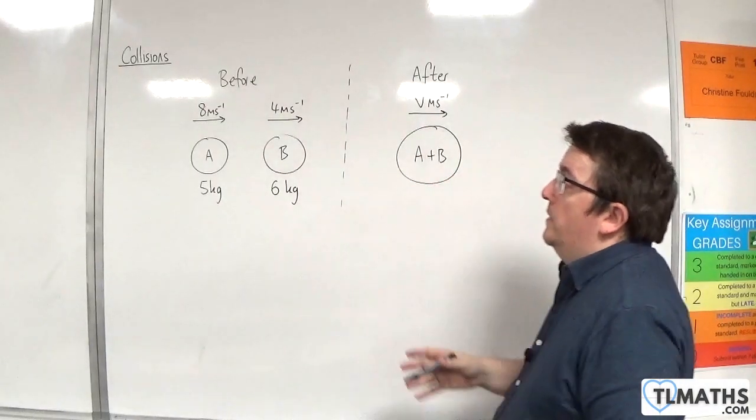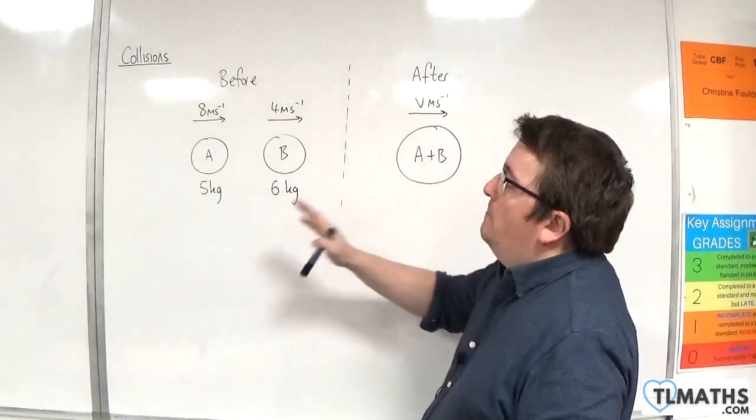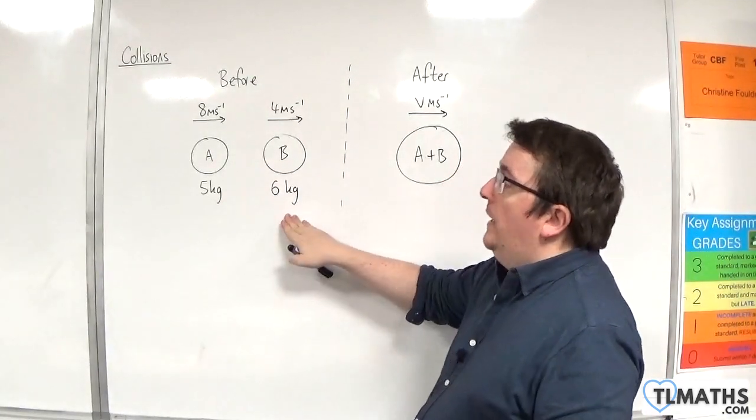So, in this video, we have two particles, A and B, which have masses of 5 kilos and 6 kilos, respectively.